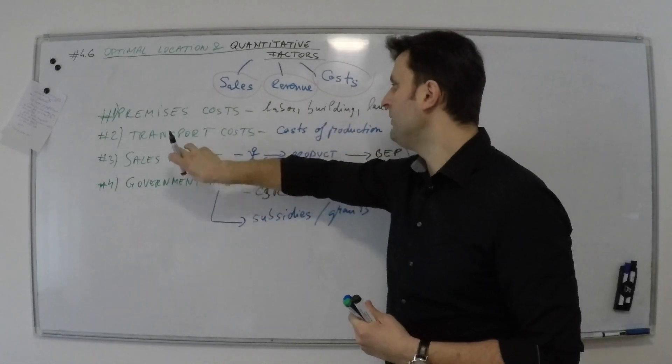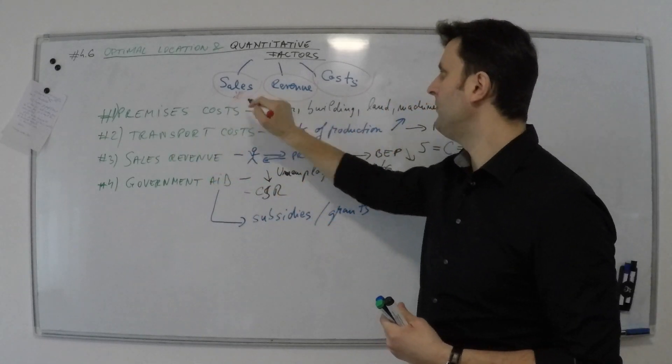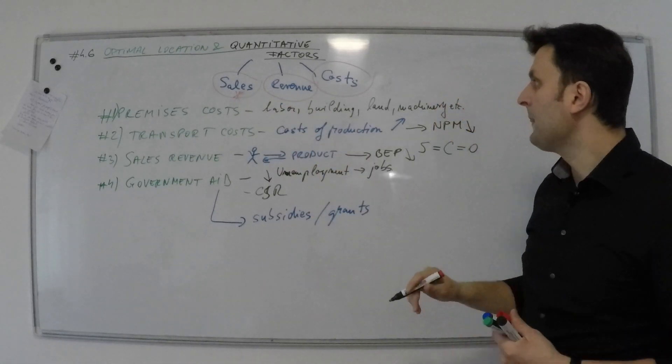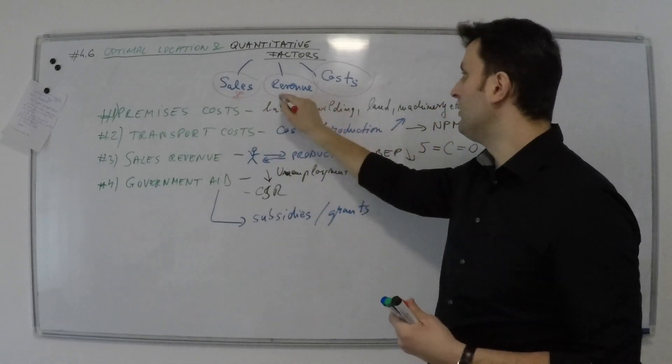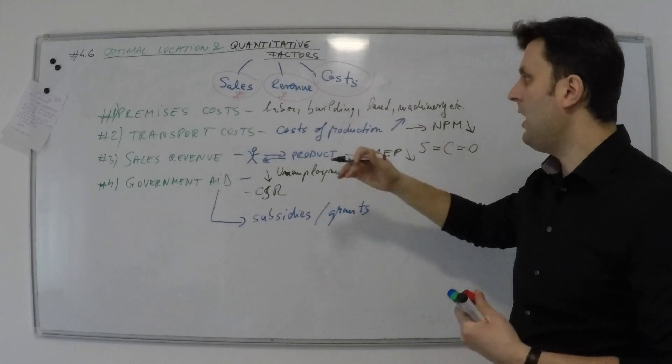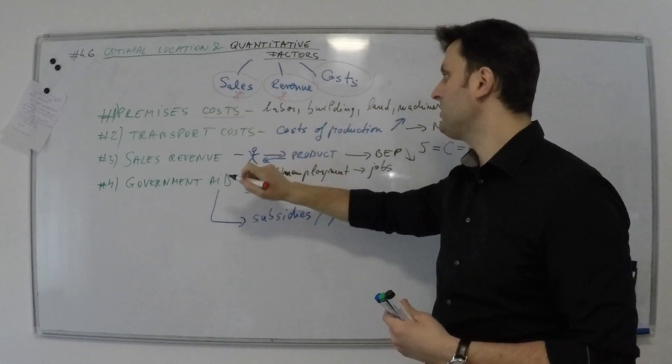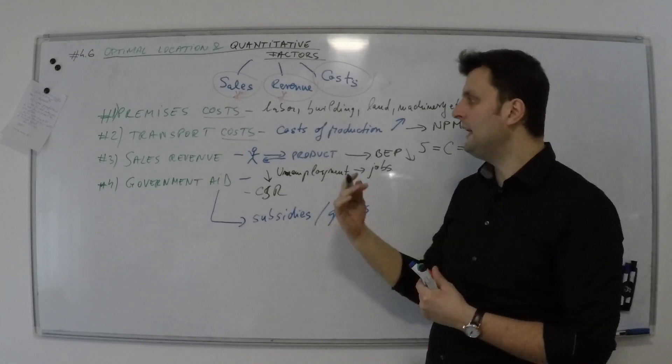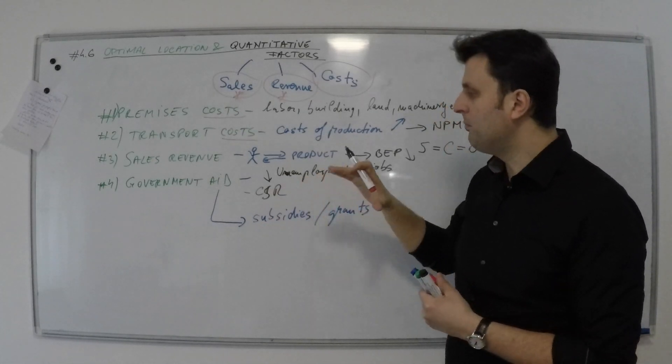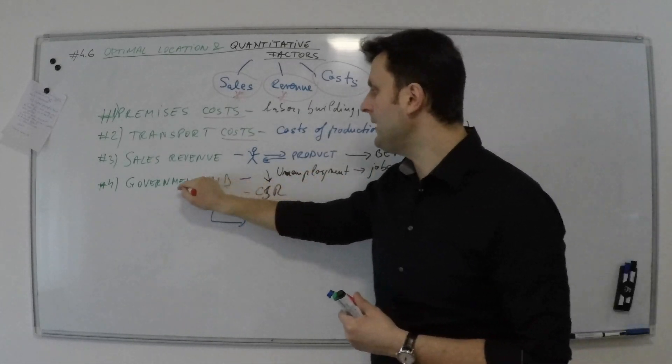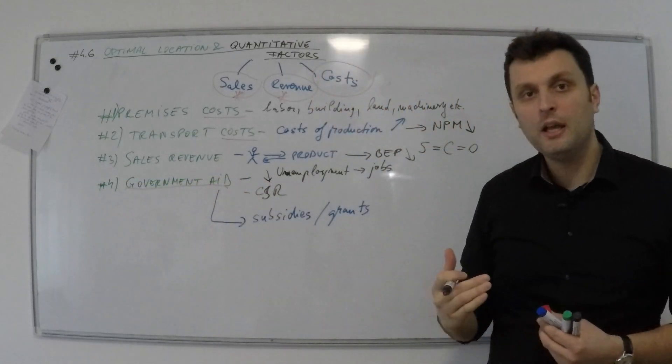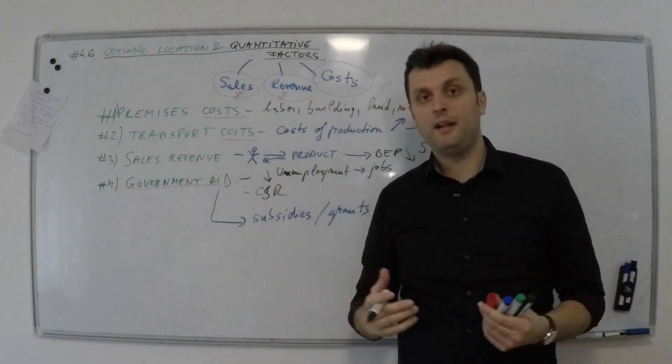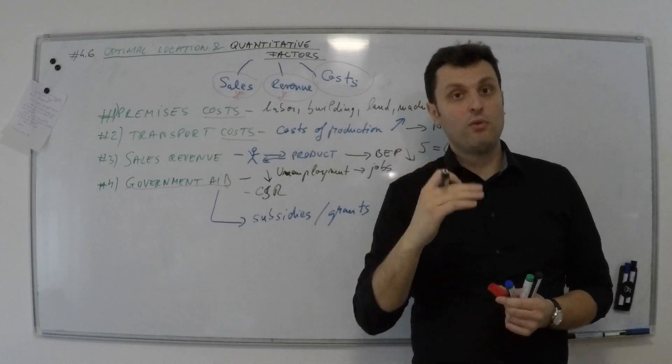I split them into certain divisions such as revenue potential and break-even point for sales and revenue, then I focus on costs, all sorts of costs from premises costs to transport costs. I also look at political stability and the government aid I can get from that country in order to move my business there and operate successfully. Thank you for watching this video.